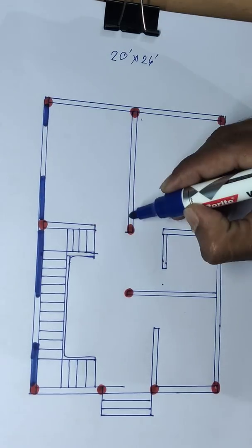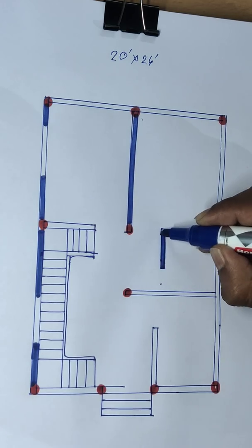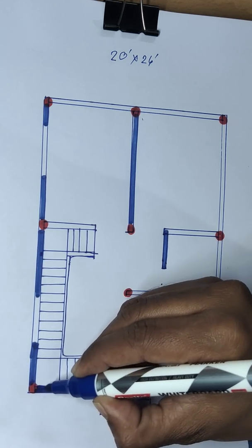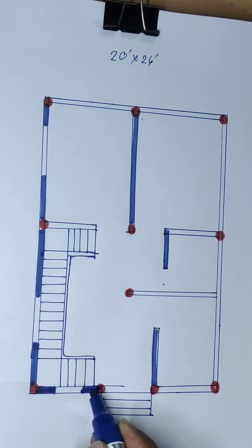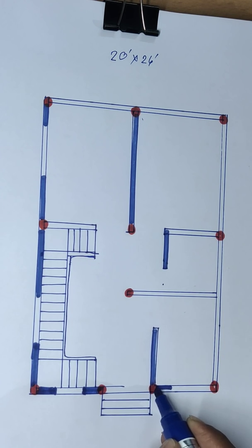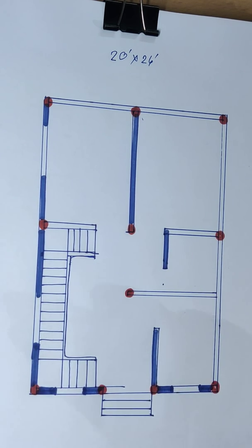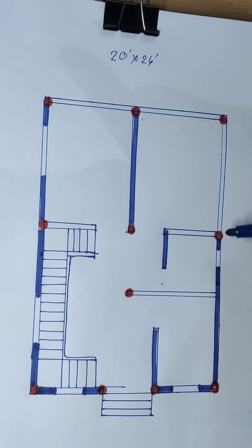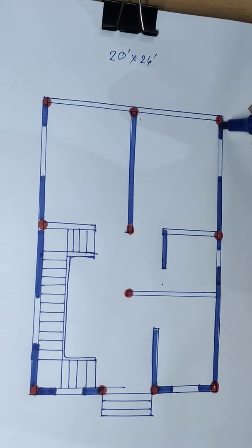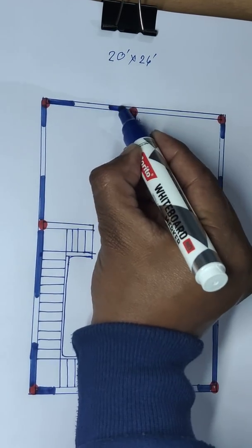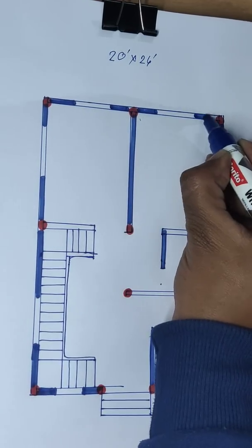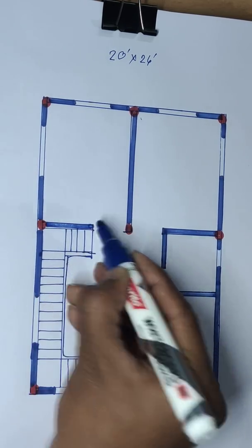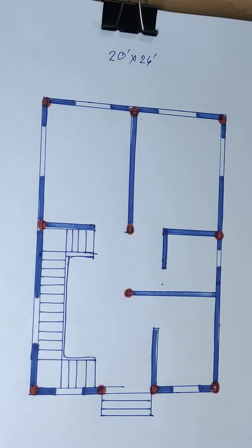This is wall — internal partition wall. This is wall, internal partition wall, and this is internal partition wall and outer wall. This is 5-inch wall, internal partition wall, and this internal partition wall is 5-inch — internal partition wall.